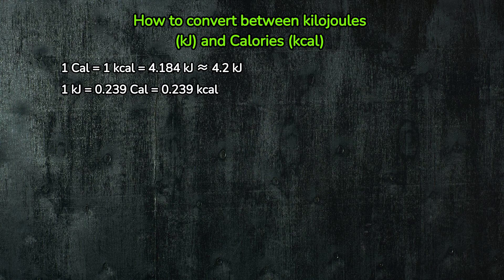The key conversion to remember is that 1 calorie equals 4.184 kilojoules. But who wants to deal with decimals, right? For quick estimates, you can use 1 calorie is roughly 4.2 kilojoules.